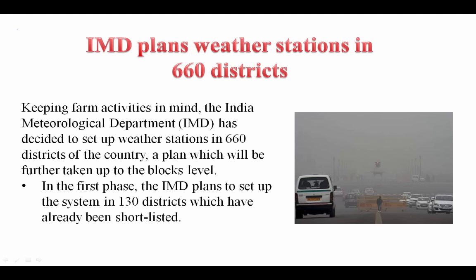IMD plans weather stations at 660 districts. IMD — India Meteorological Department — keeping farm activities in mind, has decided to set up weather stations in 660 districts of the country. Initially they are planning for 130.